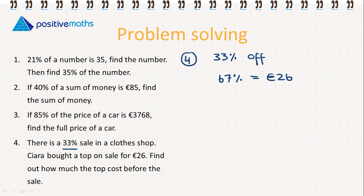What we're saying then is the sale price is going to be 67% of the original value. So 67%, we're saying it's 26 euro. Again, we want to find 1% first. 26 divided by 67 will give us 0.388 rounded to three places.